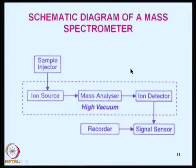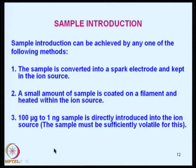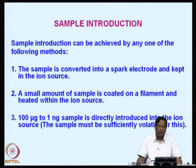A schematic diagram of a mass spectrometer shows the sample injector going into the ion source, followed by a high-vacuum mass analyzer, then the ion detector, signal sensor, and a recorder. Let us discuss the different aspects of the mass spectrometer.